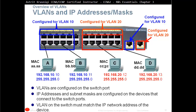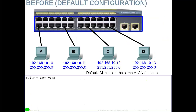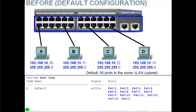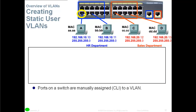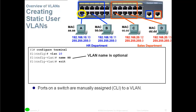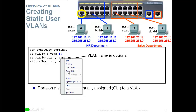Each VLAN will have its own IP address and its own subnet. Before any configuration, if you do 'show vlan' on the switch, all ports will be on VLAN 1 — the default VLAN — and it will be active. To create a static user VLAN, go into global configuration mode and type 'vlan 10' (or whatever number), which puts you into VLAN configuration mode.